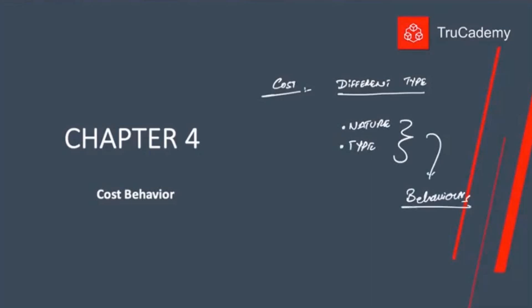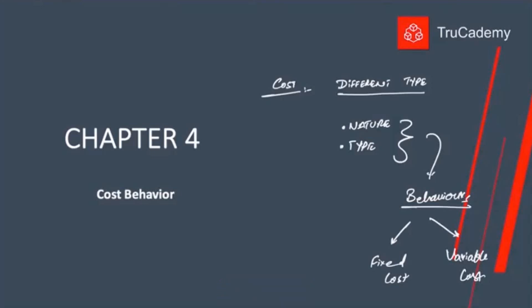Two of these behaviors we already saw in Chapter 1: the first was fixed cost and the second was variable cost. Total fixed cost is a cost which remains fixed at any level of activity — even if the level of activity increases or decreases, total fixed cost always remains constant.